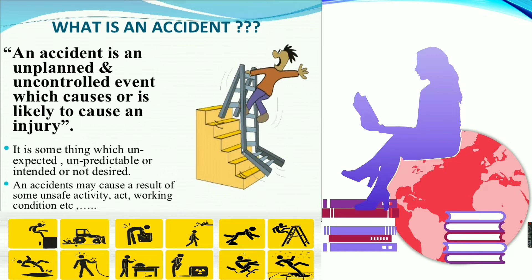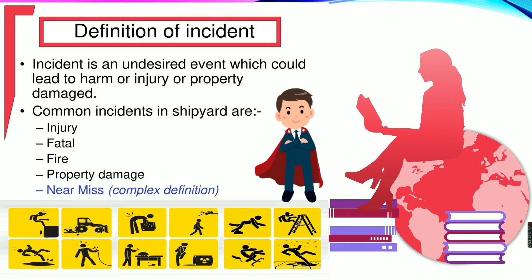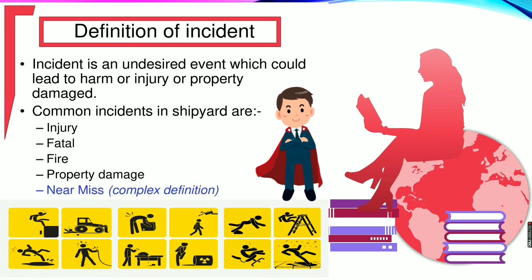An accident is an unplanned and uncontrolled event which causes, or is likely to cause, an injury. It is something which is unexpected, unpredictable, or unintended — not desired. An accident may be caused by or result from some unsafe act, activity, or walking condition.